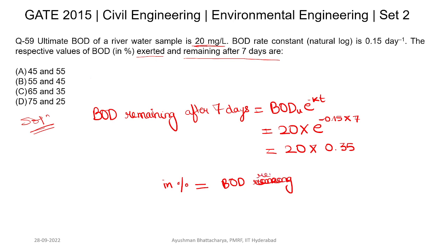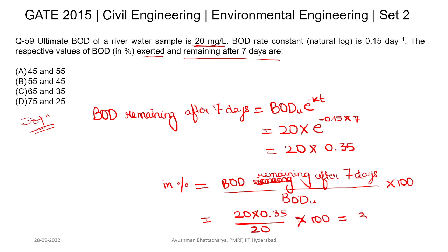BOD remaining after seven days divided by ultimate BOD equals (20 × 0.35) / 20 × 100, which equals 35%. So BOD remaining after seven days is 35%.